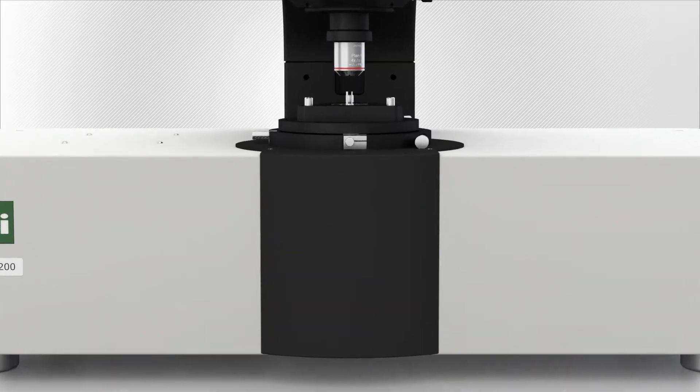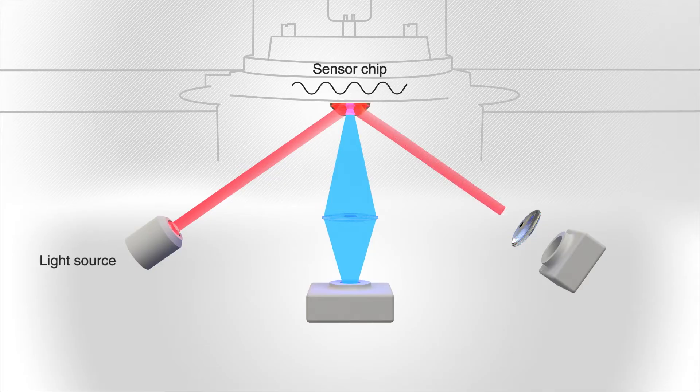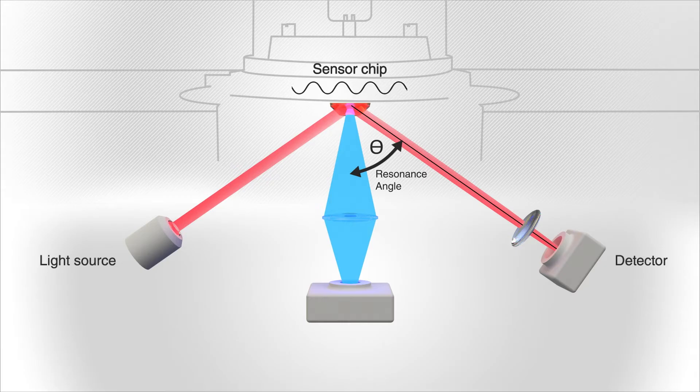In SPRM200, monochromatic light is reflected off the back of a sensor chip and onto a detector. At a certain incident angle, known as the resonance angle, light is absorbed by electrons in the metal layer of the sensor chip, causing them to resonate.